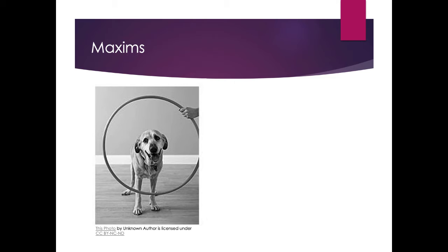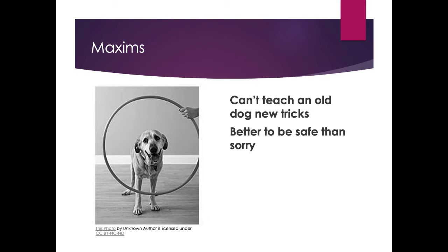Another way to achieve clarity is by using maxims — concise statements that convey a principle to the audience. It's the distillation of a principle boiled down into just a few words. You know these: 'Can't teach an old dog new tricks,' 'Better to be safe than sorry,' and even 'Buy low, sell high.' So using concrete words and maxims are both ways you can help increase clarity in your speech.